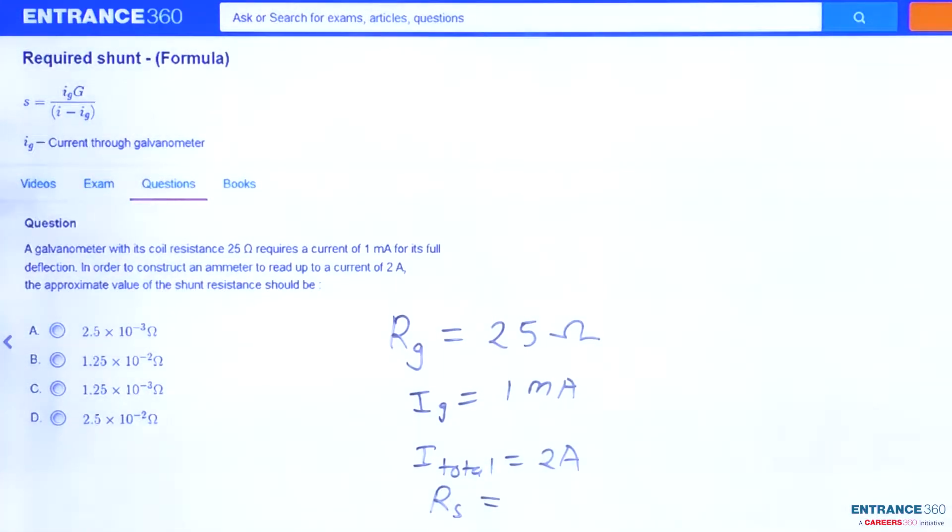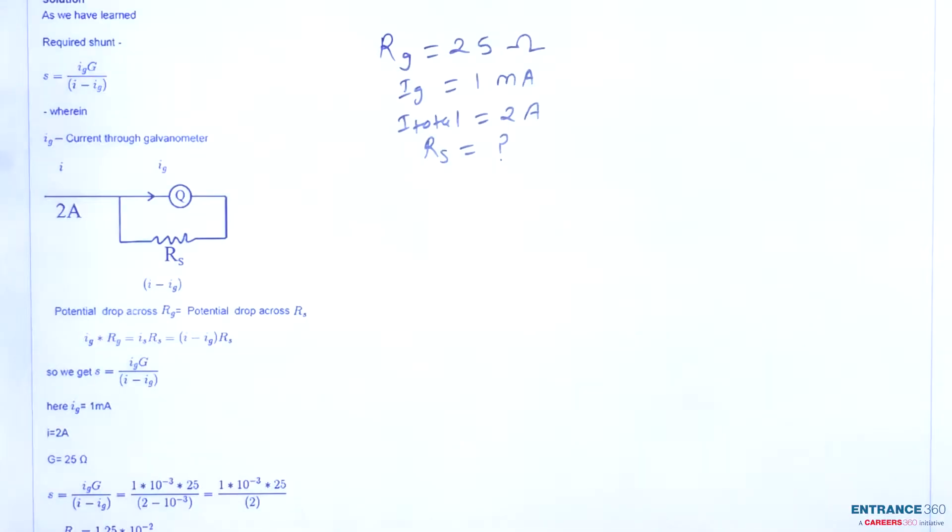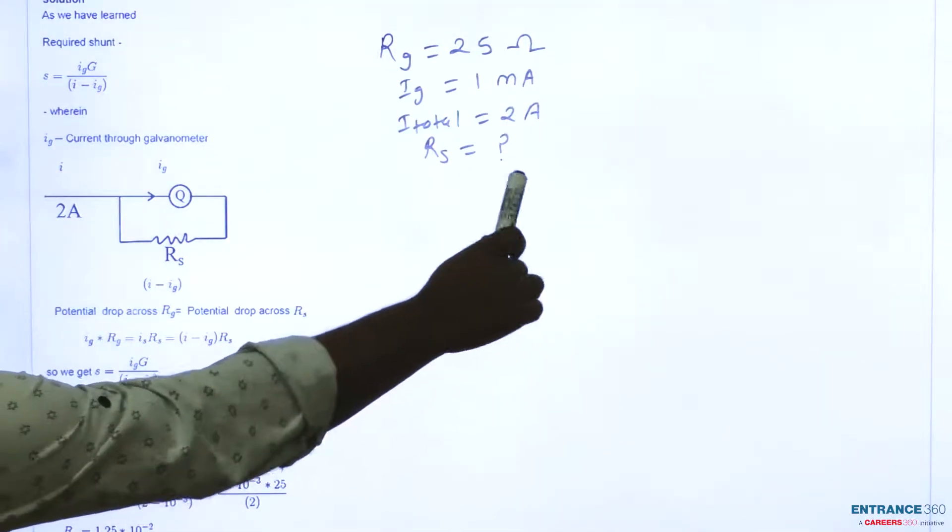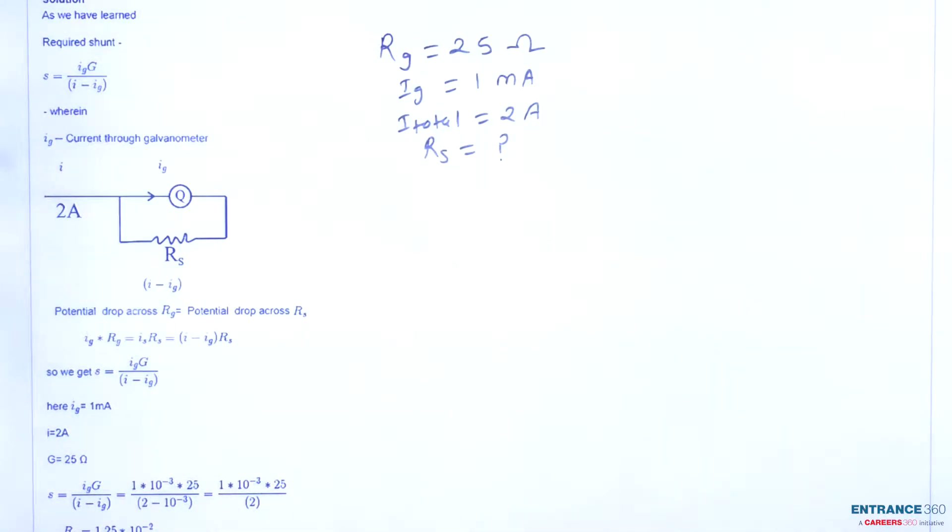So here are the four options given. So let's try to solve this question. So students, after reading the question, we write down the given quantities and what quantities we have to find. But to solve the question we also know the concept which will be helpful in solving the question.